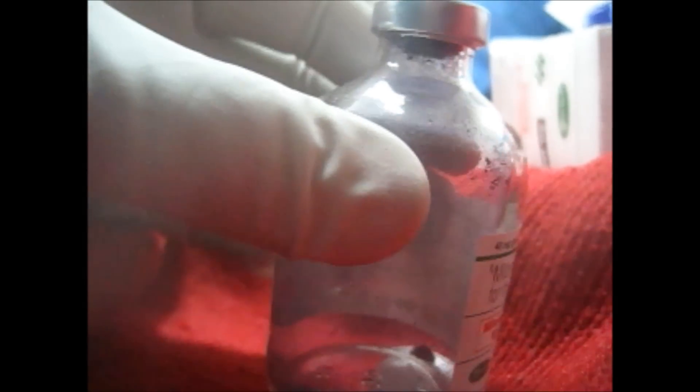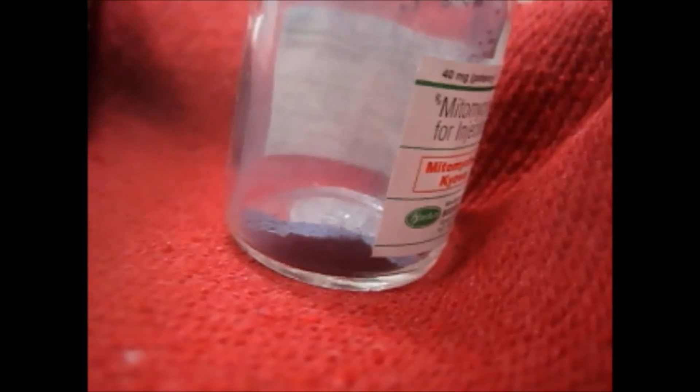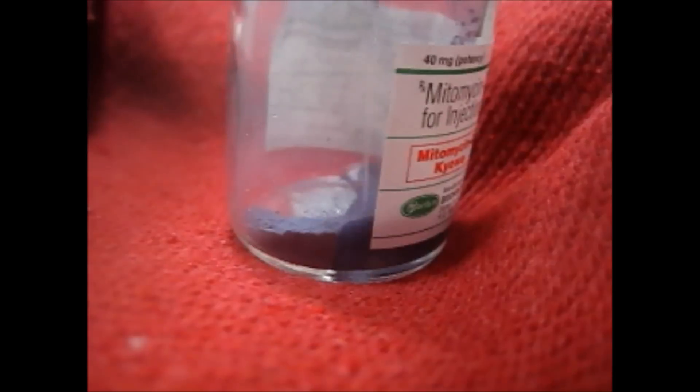Hi friends, this is the mitomycin vial. You can see mitomycin is of purple color and we will dilute it with 50 ml of normal saline. This is 40 milligrams of mitomycin and we are giving it to this patient.